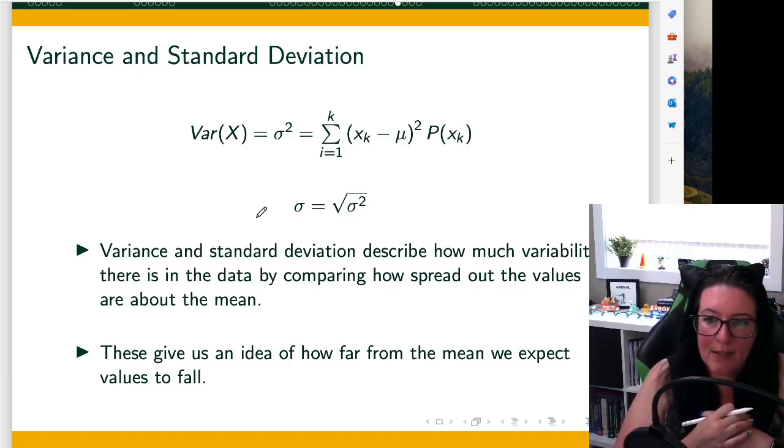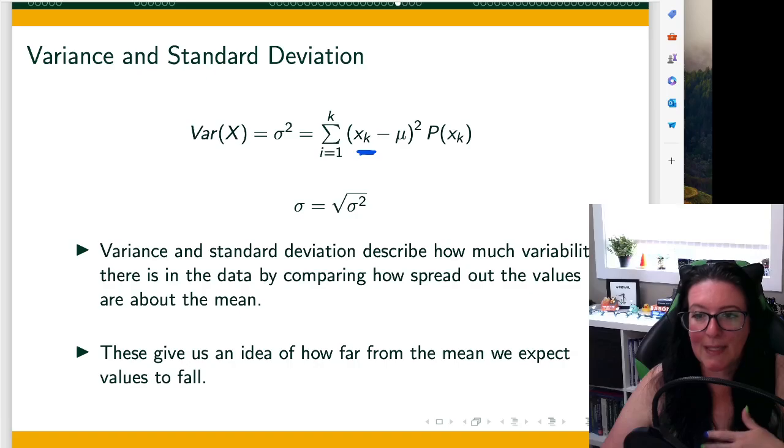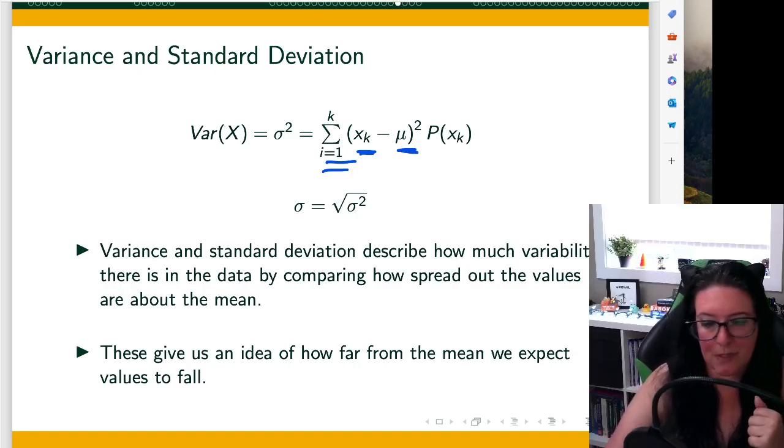To find the variance, we'll call that sigma squared. What we do is we take our value, our expected outcome, how many heads, so two heads minus the average 1.5. We square that distance and we then multiply it times the probability of that outcome. And we do that for all the different possible outcomes. We sum them all up.